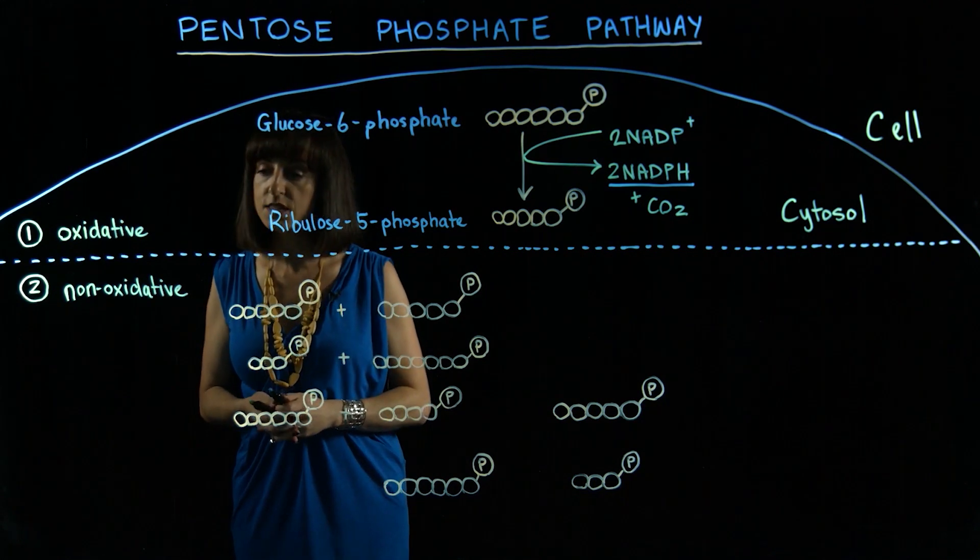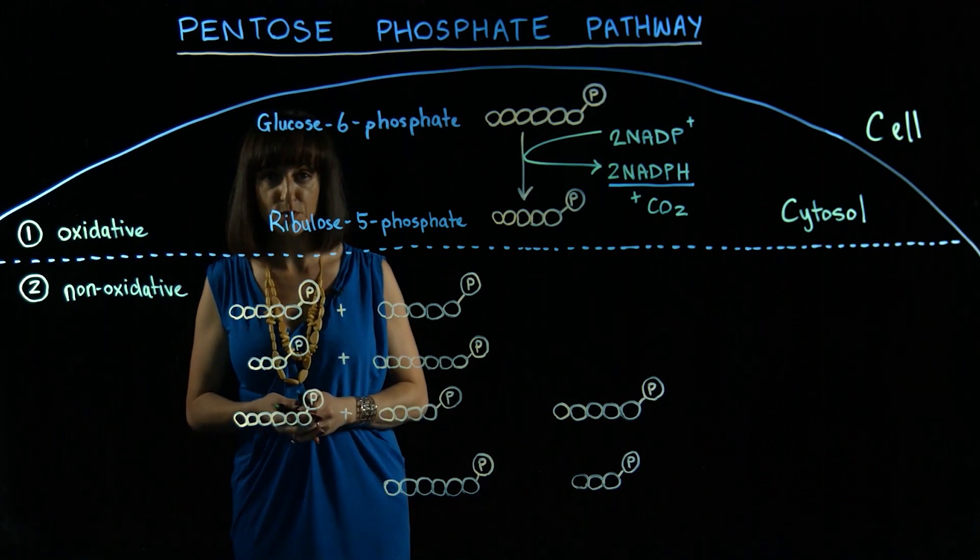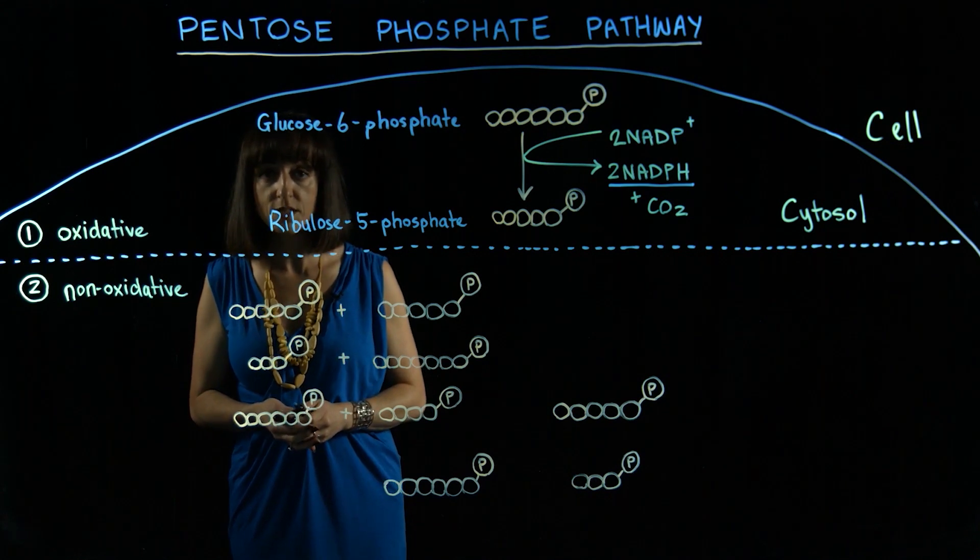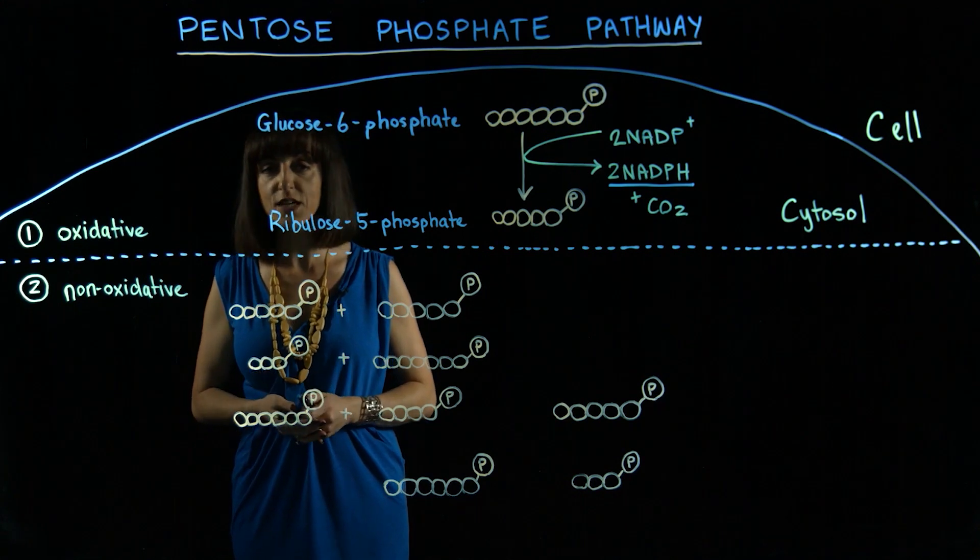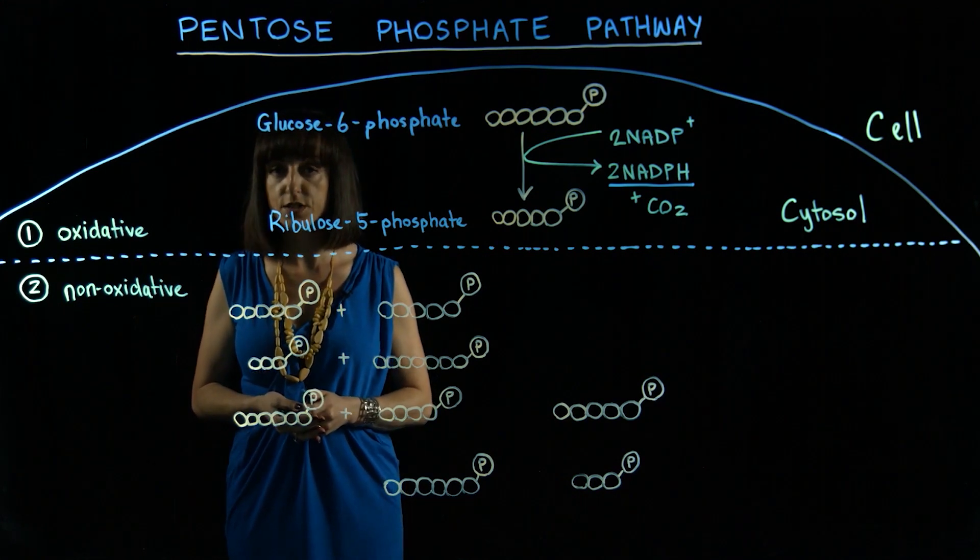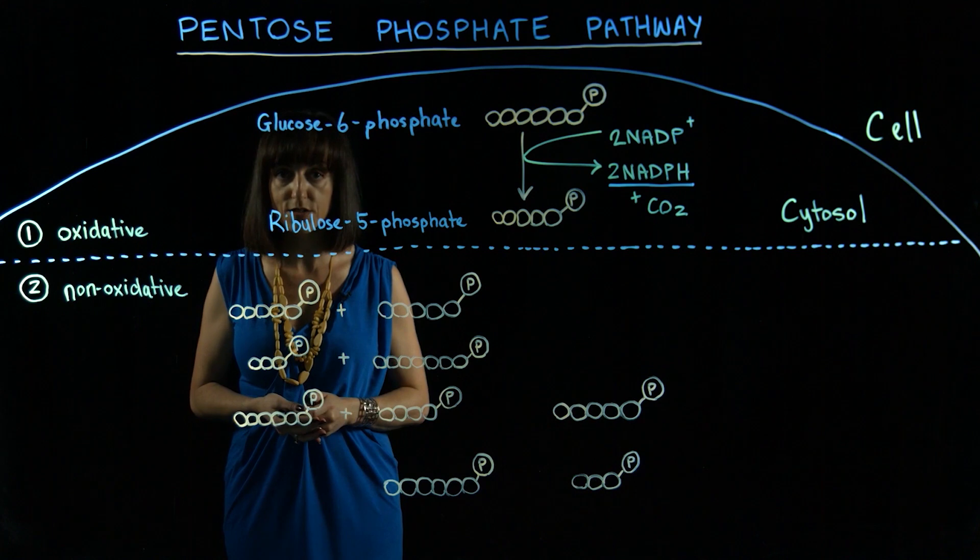The non-oxidative phase of the pentose phosphate pathway catalyzes the interconversion of 3, 4, 5, 6, and 7 carbon sugars in a series of non-oxidative reactions.